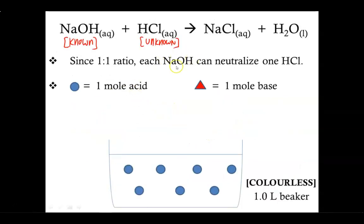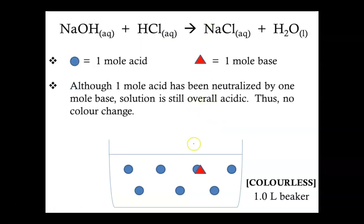So let's go over a sample titration. In grade 11 chemistry, you were asked to titrate an unknown HCl concentration using a known sodium hydroxide solution — one you made yourself, so of course you knew its concentration. From the balanced equation, we know it's a 1-to-1 ratio, so one sodium hydroxide can neutralize one hydrochloric acid molecule. Right now the indicator, phenolphthalein, is colorless because there are a lot of H⁺ ions floating around. If I add sodium hydroxide, it neutralizes one HCl, but you still have a lot of H⁺ ions, so the indicator still shows the solution is colorless because it is overall acidic.